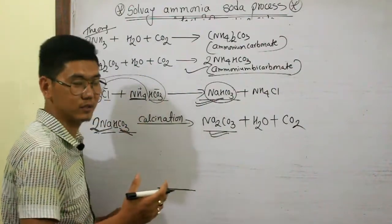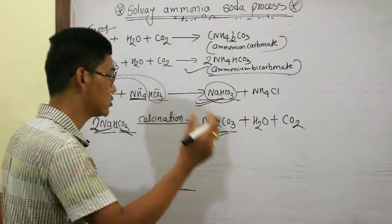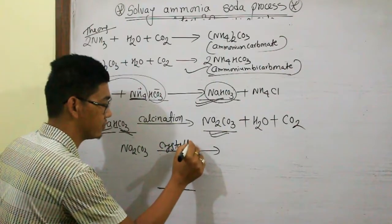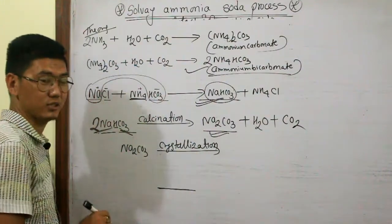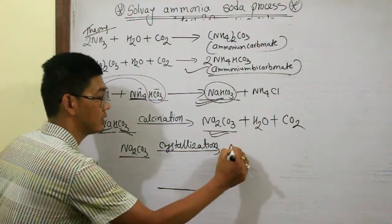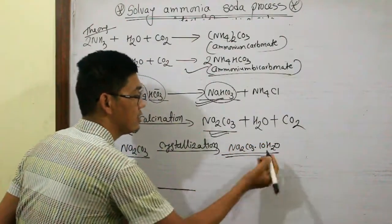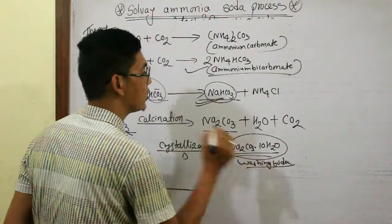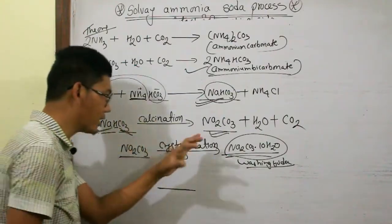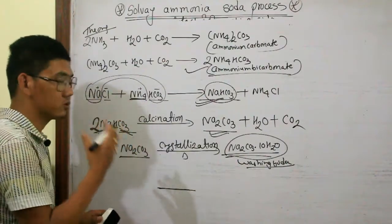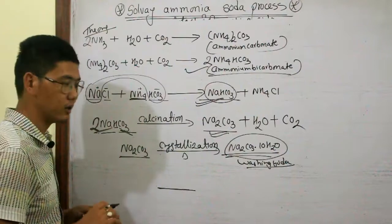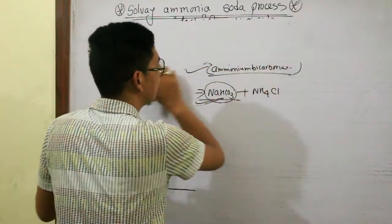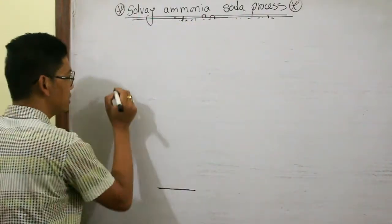This sodium carbonate then has 10 water molecules added through a process called crystallization. By crystallization we add Na2CO3 with 10 water molecules and finally we get washing soda — Na2CO3·10H2O. Sodium carbonate can hold a maximum number of water molecules in this way.